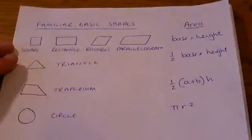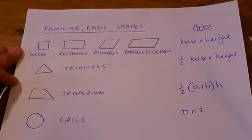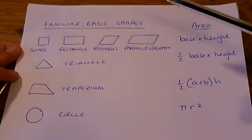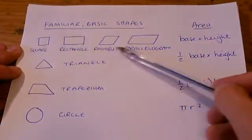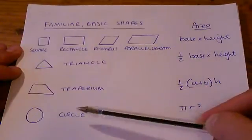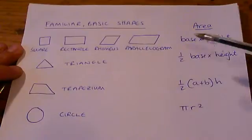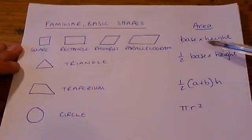A quick check might be to have a little run through of all the shapes that you are familiar with, like a square, a rectangle, a rhombus, a parallelogram, a triangle, a trapezium, or a circle. All of these shapes have got formulas that we can just use straight away to work out their area.